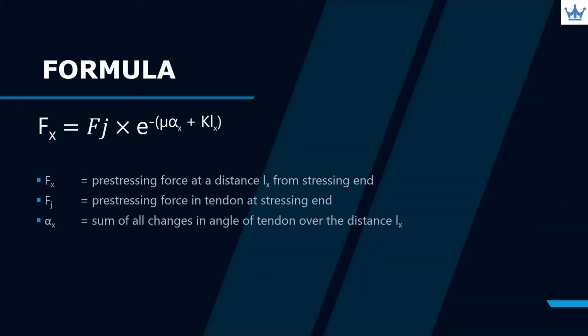Refer to the formula shown for friction loss. We need to identify the mu and k value from the tensioning system supplier and calculate the summation of angular change. Here, we can find the loss of force due to friction.